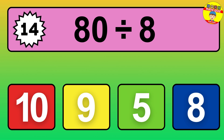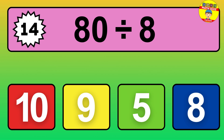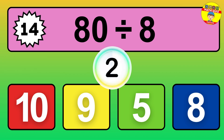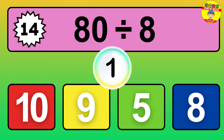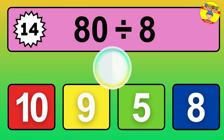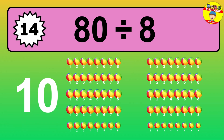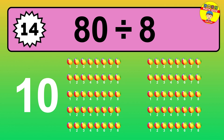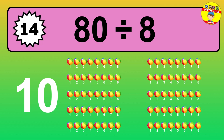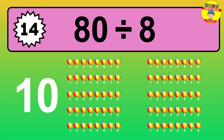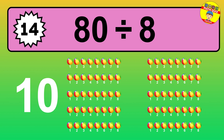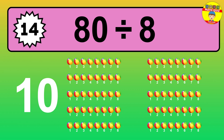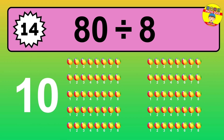What is 80 divided by 8? Picture this: you have 80 objects to divide into groups of 8. How many groups can you make? Let's think about it. Ready to find out? Let's break it down. Let's imagine you have 80 objects. Can you picture them lined up? Now, think about splitting them equally into smaller groups of 8.